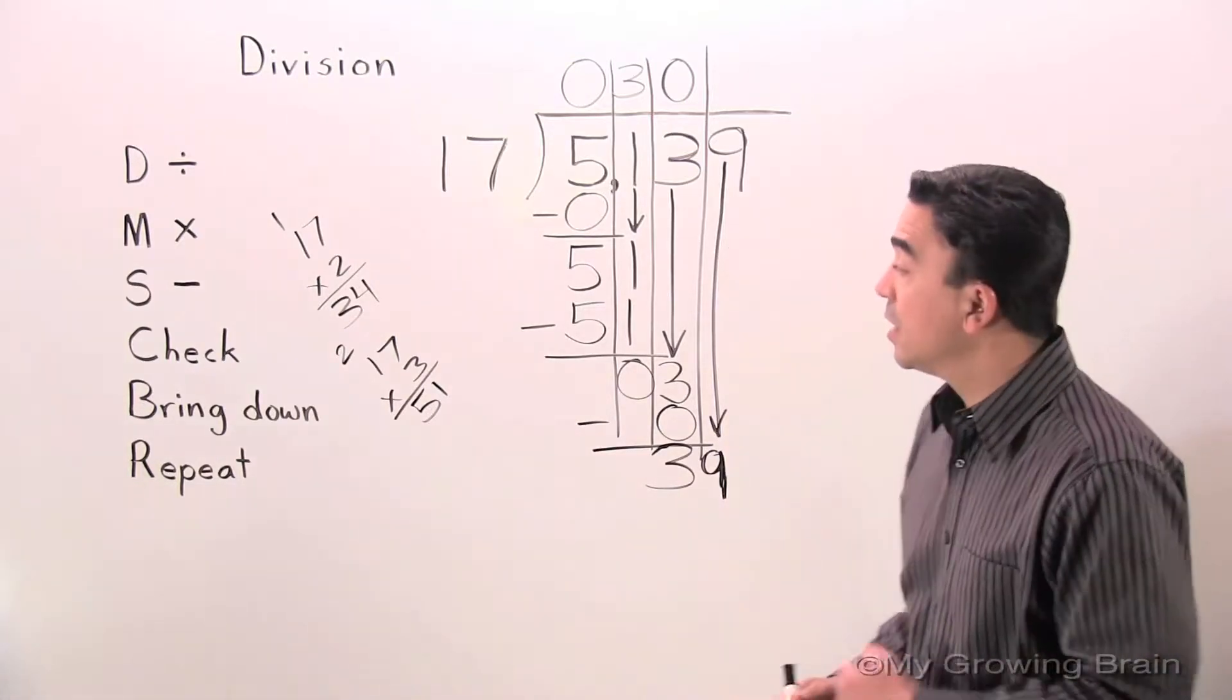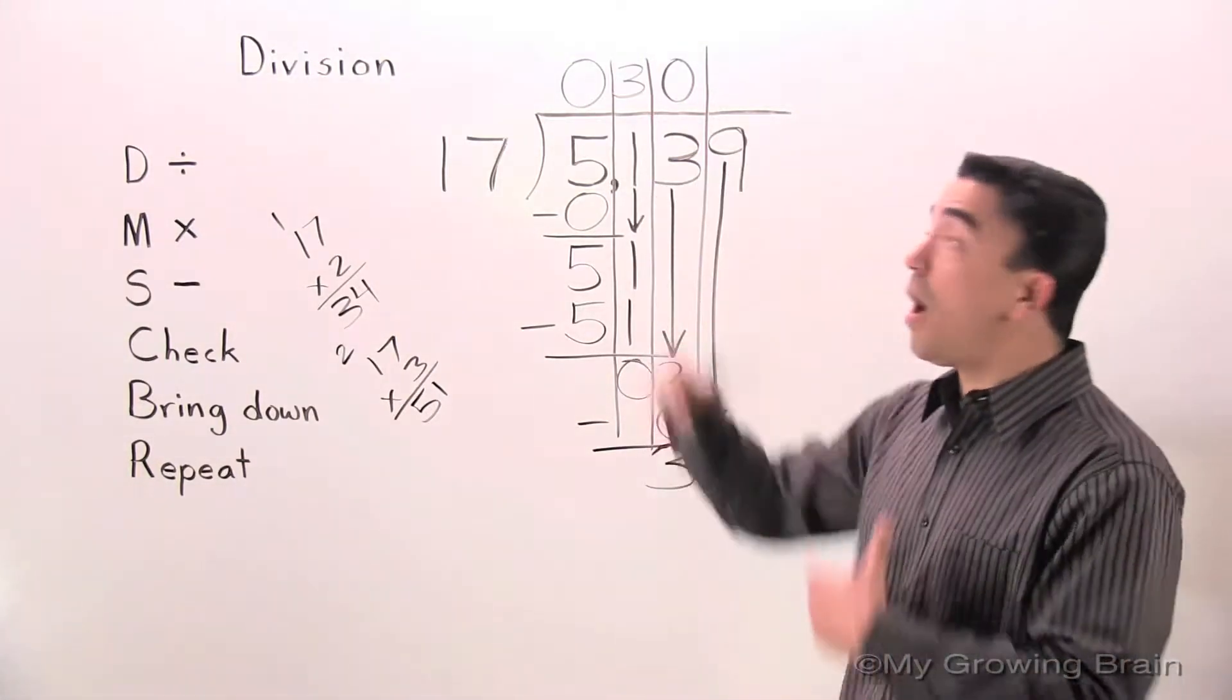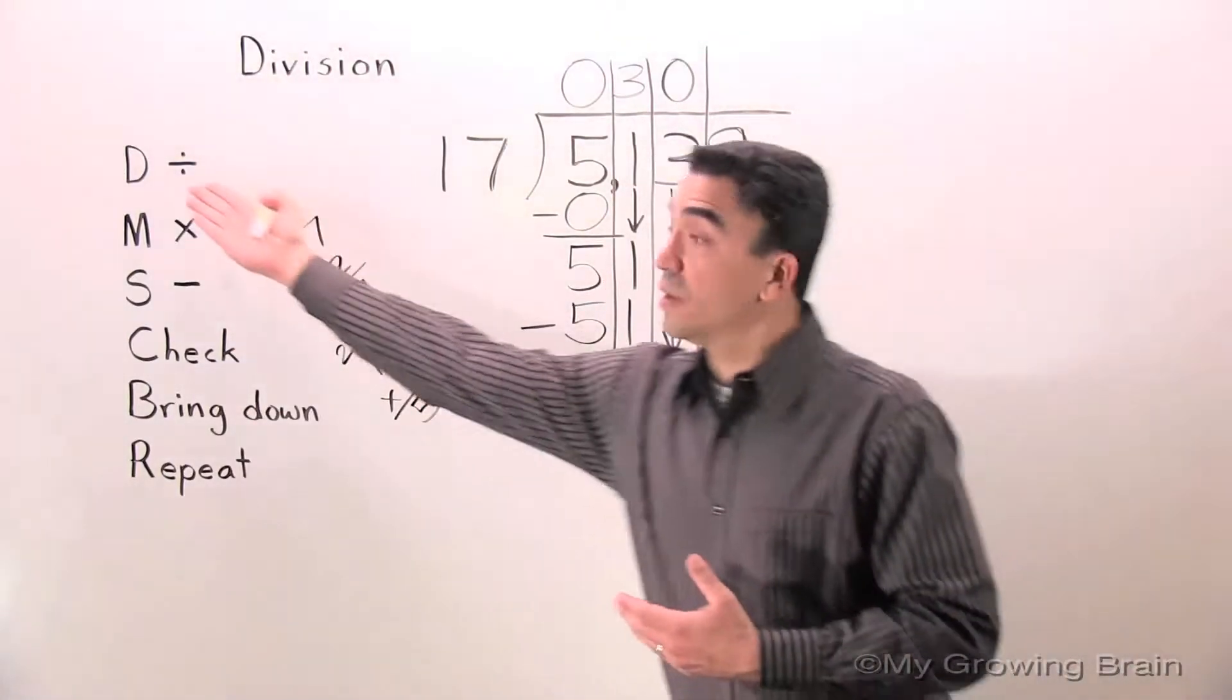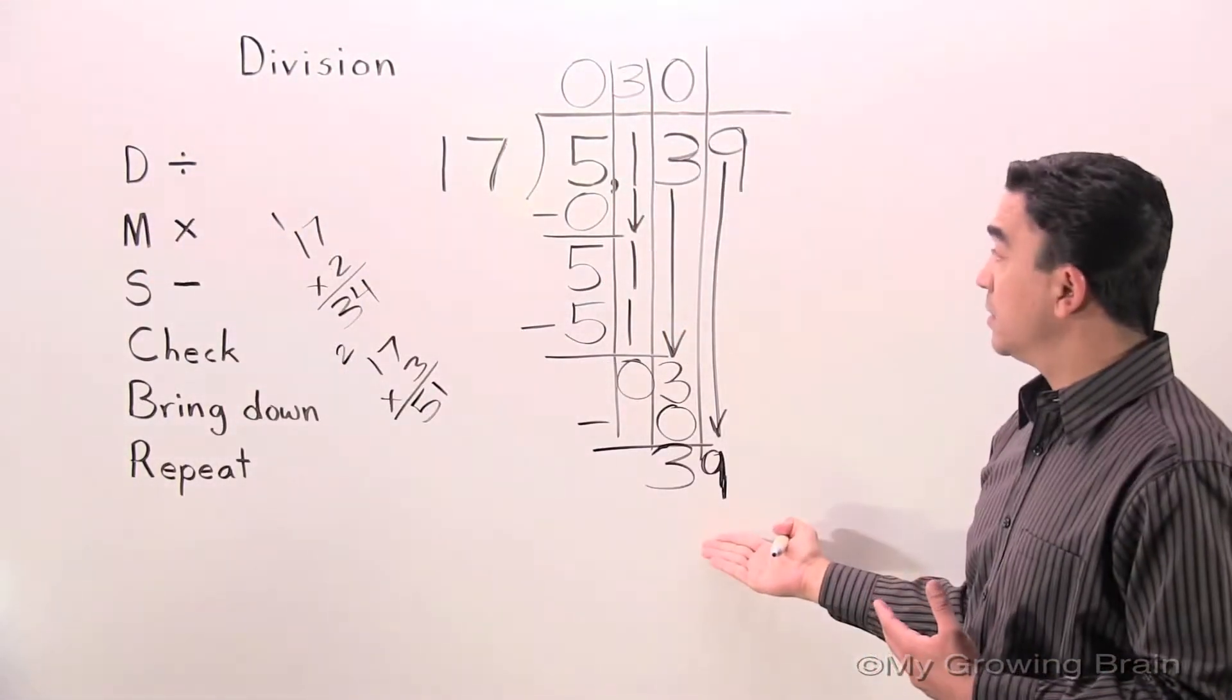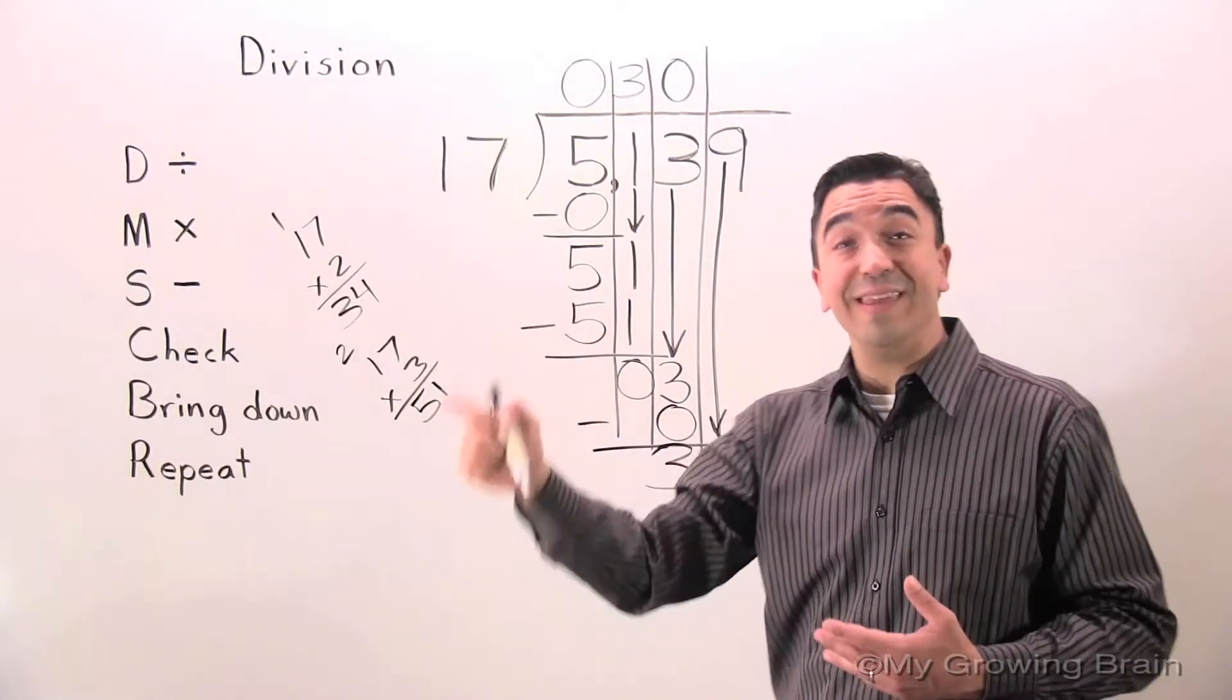39. Repeat the process. All the way back to the top. Divide. 39 divided by 17. Or 17 into 39. Well,